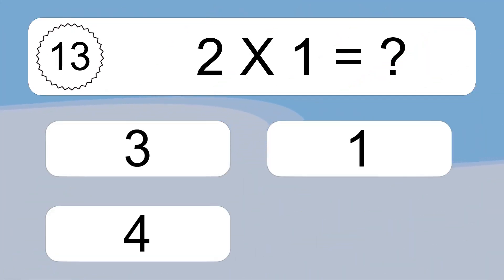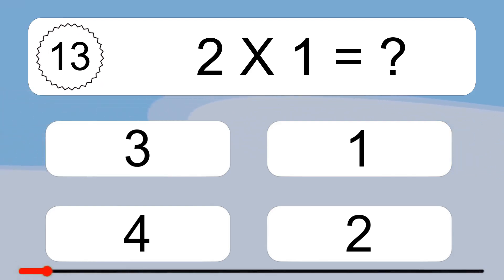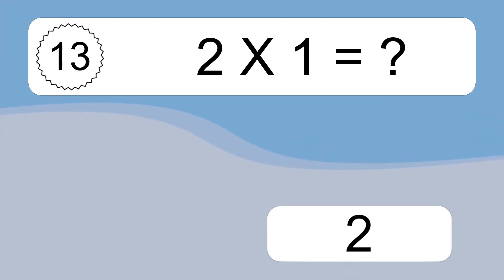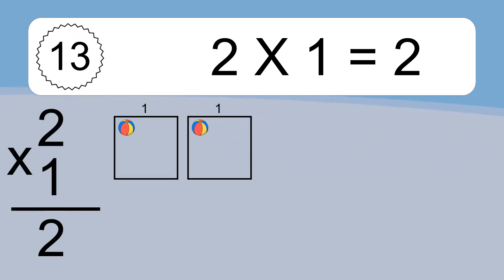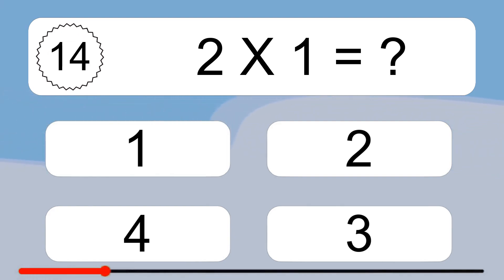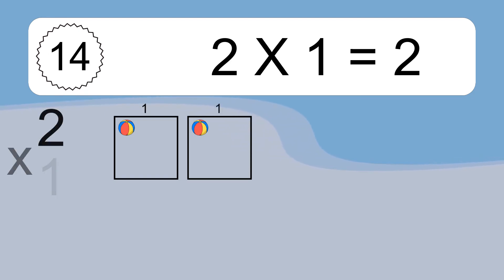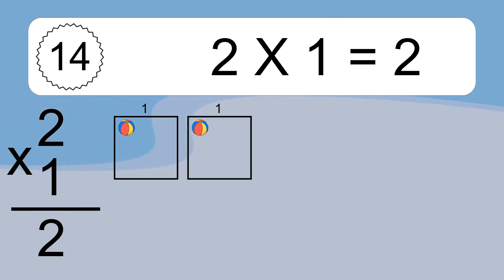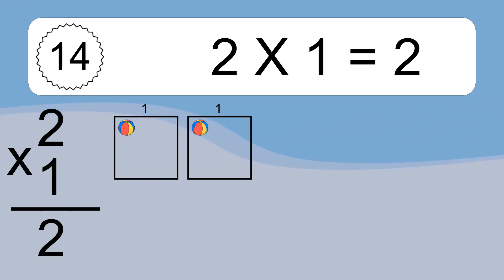2 times 1 equals what? 2 times 1 equals 2. We have 2 boxes and each box has 1 colorful ball inside. If you count all the balls in all the boxes together, you will have 2 times 1 balls. This equals 2 balls.